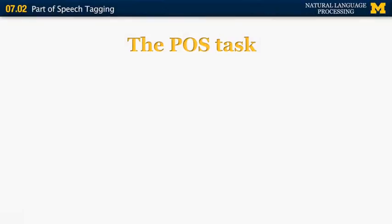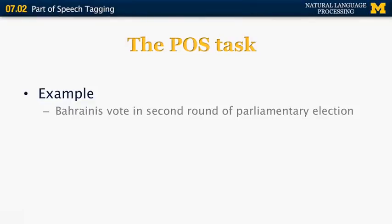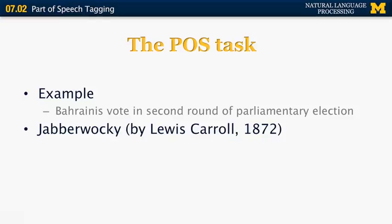Let's define first what the POS, or part of speech task, is. We have a sentence: 'Bahrainis vote in second round of parliamentary election.' We have eight words and each of those words needs to be associated with a part of speech — things like nouns, verbs, prepositions, and articles.